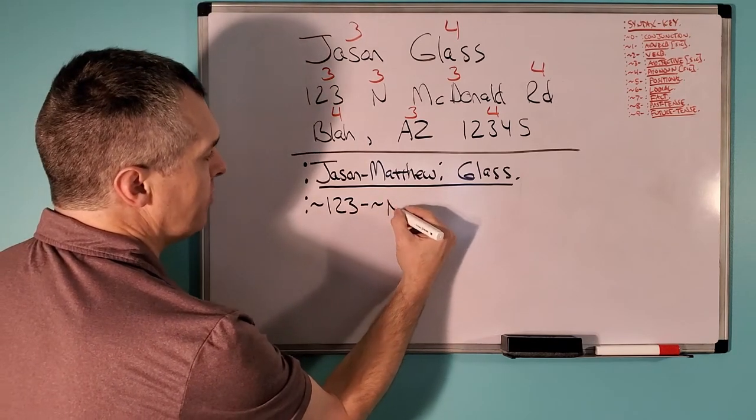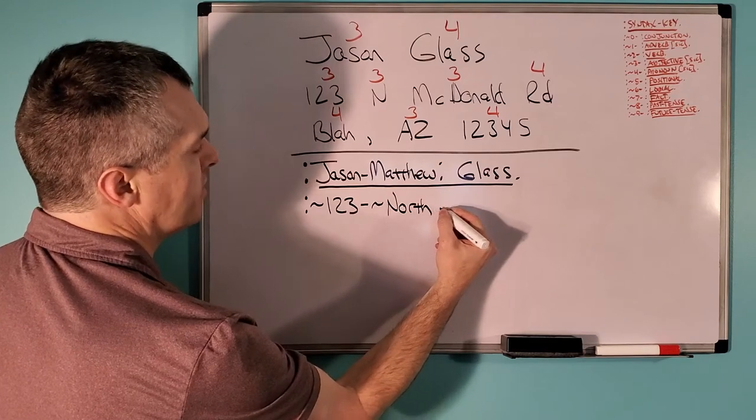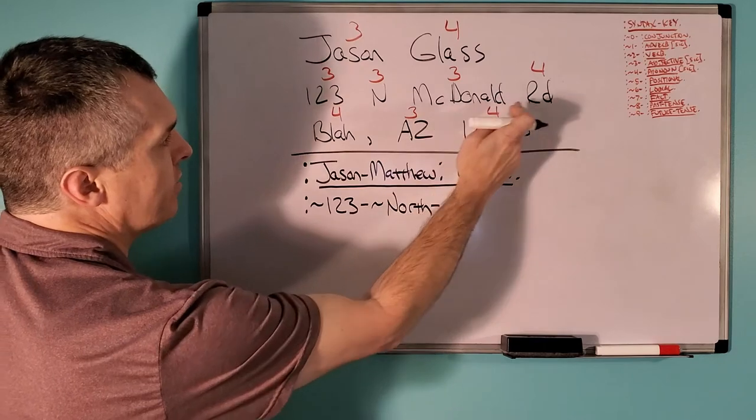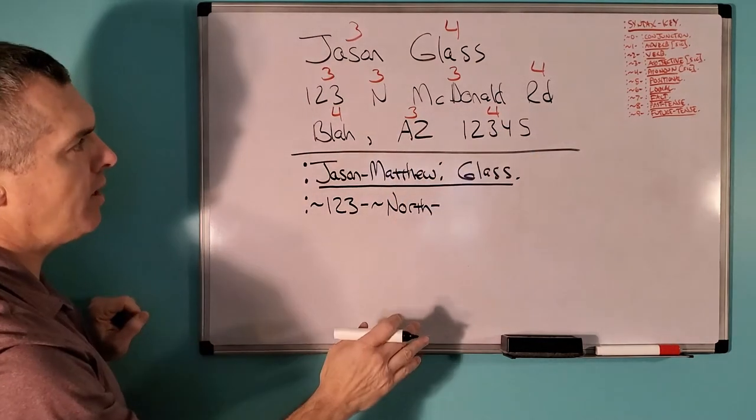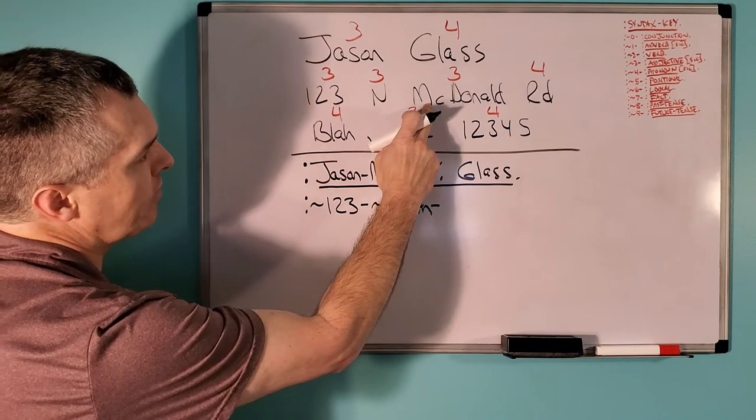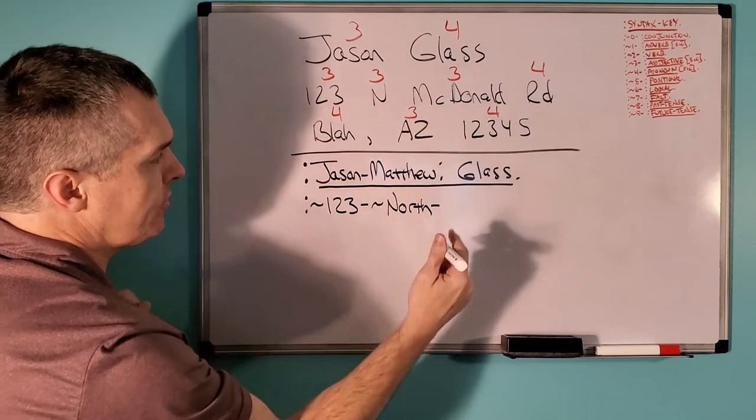I would not abbreviate North. I would write it out. Now, North McDonald Road is a compound noun when I write it out here. Now, you see here we have a capital M, a lowercase c, and a capital D.